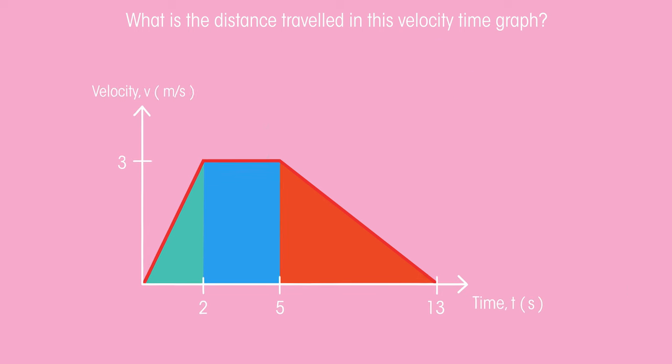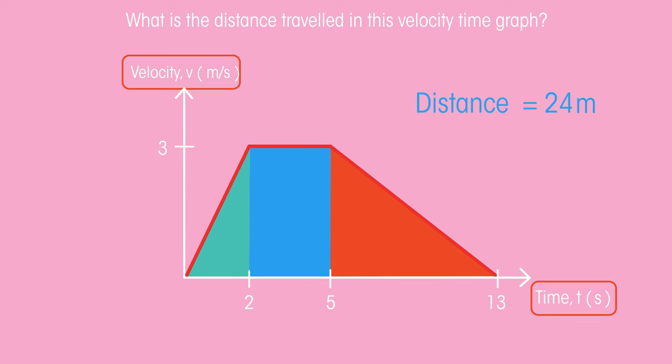For this one, it was seconds and metres per second, so the distance in metres is correct. But for this one, it's hours and kilometres per hour, so the distance would be measured in kilometres.